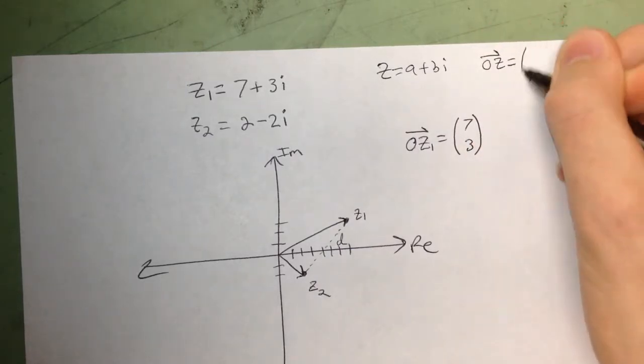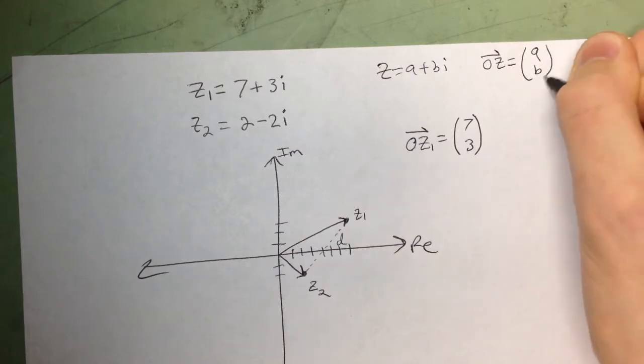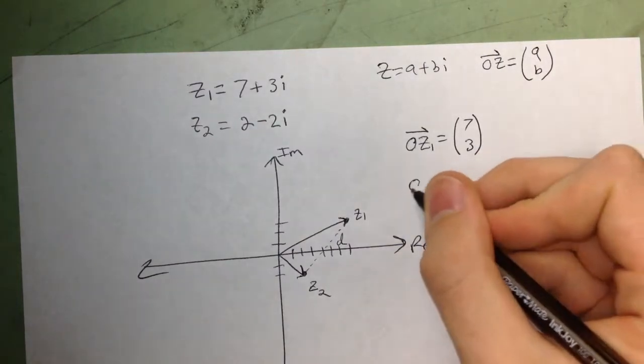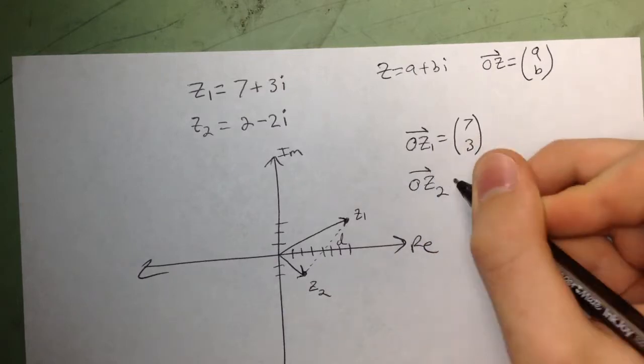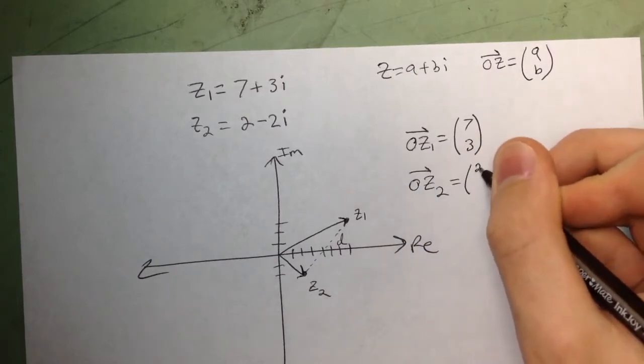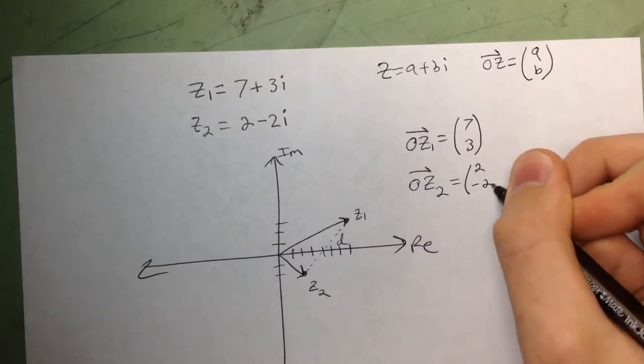always going to be (a, b). So we have that, and then we also have z2, which is (2, -2).